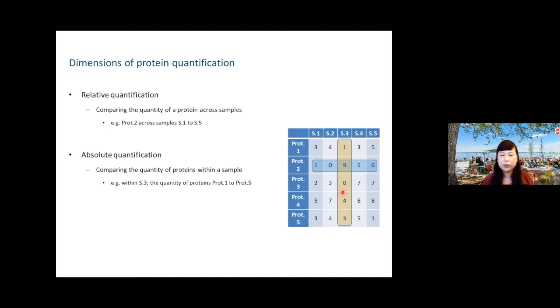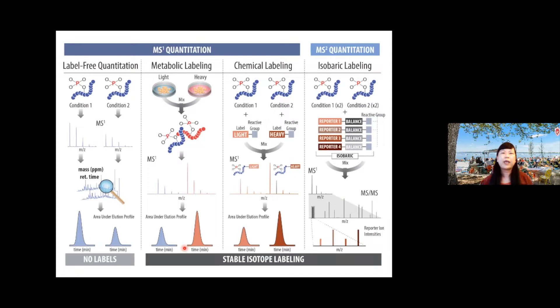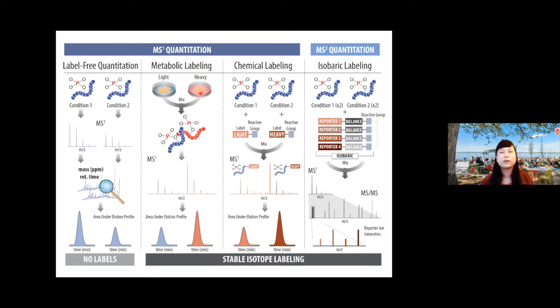We have different strategies. For MS1-based relative quantification, one approach is label-free quantification, where we sequentially compare two different samples from two different LC-MS runs, aligning their LC retention time and looking at the area under the curve. Another big category is metabolic labeling, where you culture cells in light and heavy isotope media — for example, adding heavy lysine eight daltons heavier, or heavy arginine six daltons heavier. Every newly synthesized protein incorporates these amino acids, and when you combine the two samples and perform a single LC-MS analysis, you can compare their relative abundance.